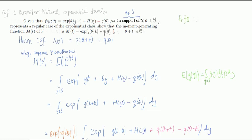In problem 90, I derived the sufficient statistic for a one-parameter exponential family, and in this one we're going to look at the MGF, the moment generating function, for one-parameter natural exponential family.